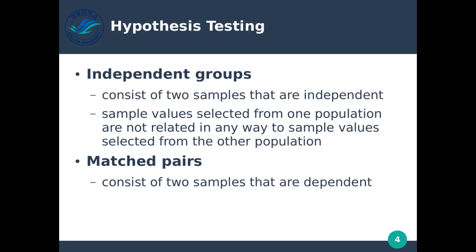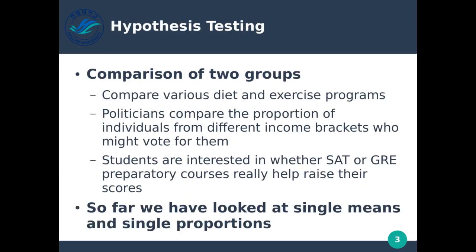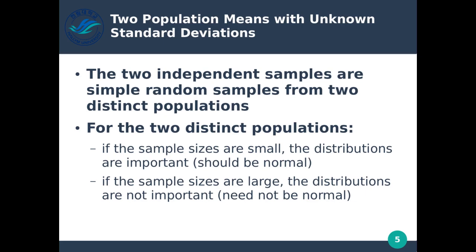We can also do hypothesis testing over matched pairs, which consists of two samples that are dependent. Two independent samples are simple random samples from two distinct populations — for example, asking people east and west of the Mississippi River what they're going to eat for breakfast, taking a random sample from both places.